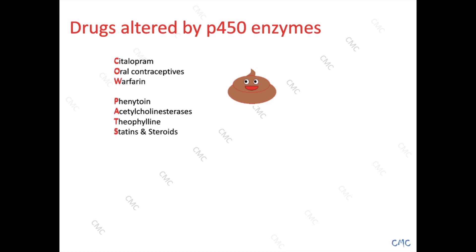For example, this is the reason why when somebody comes in with a medication like atorvastatin in their regular medications and you're going to prescribe erythromycin for community-acquired pneumonia — which is an inhibitor — you would stop the statins, because the erythromycin would stop the statins from being metabolized and statins would build up and cause, for example, rhabdomyolysis.